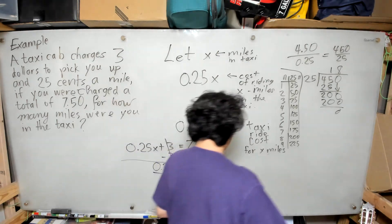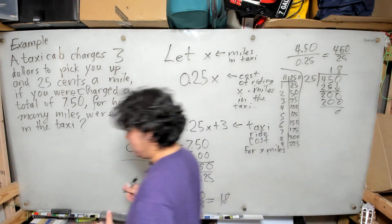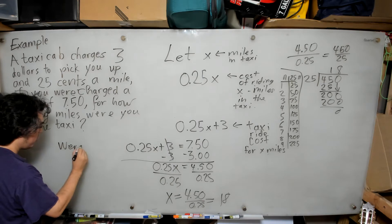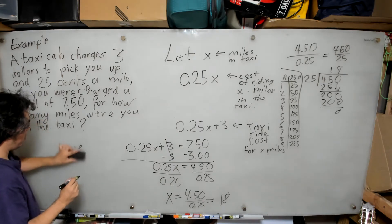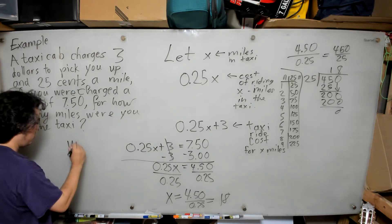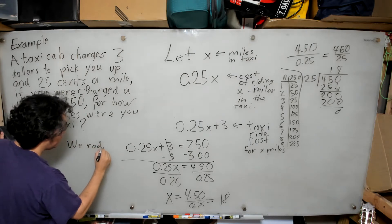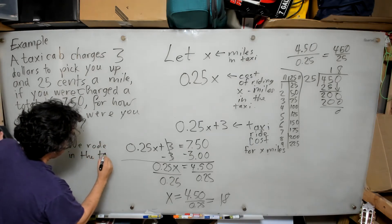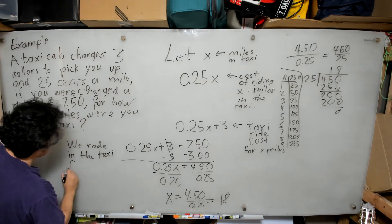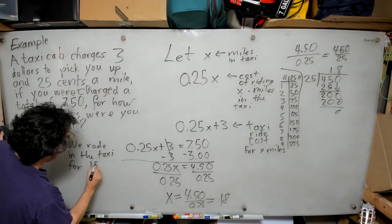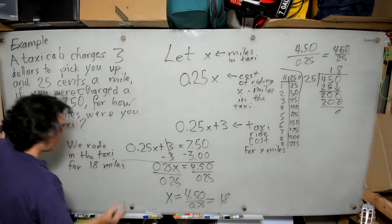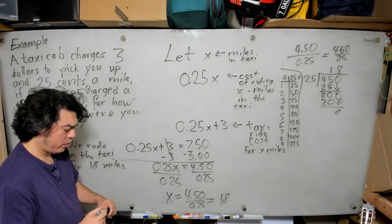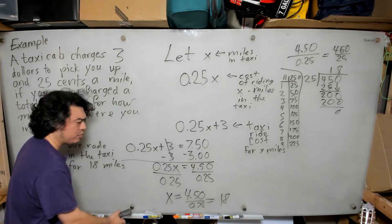So x = 18. This tells us that we rode in the taxi for 18 miles.